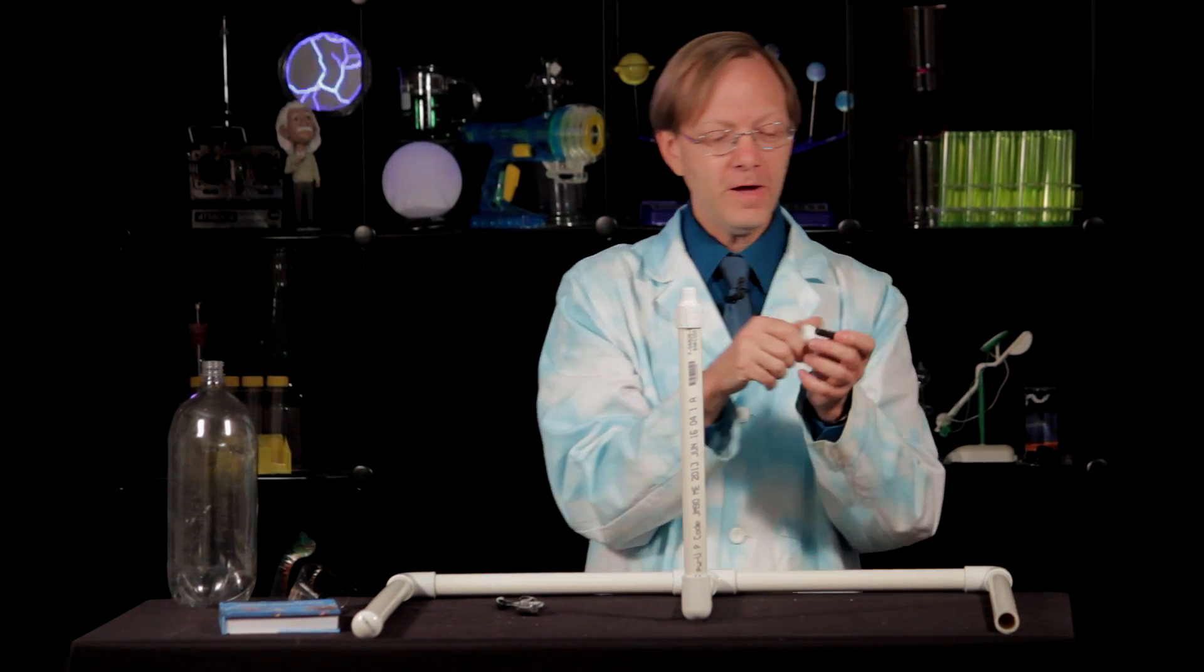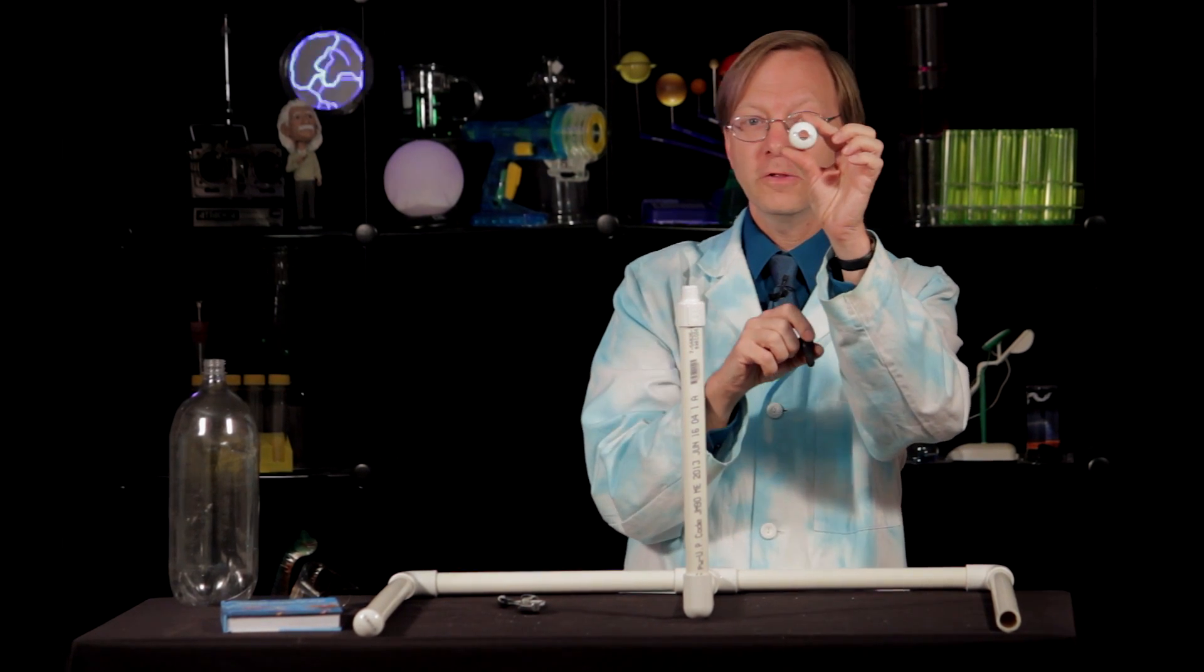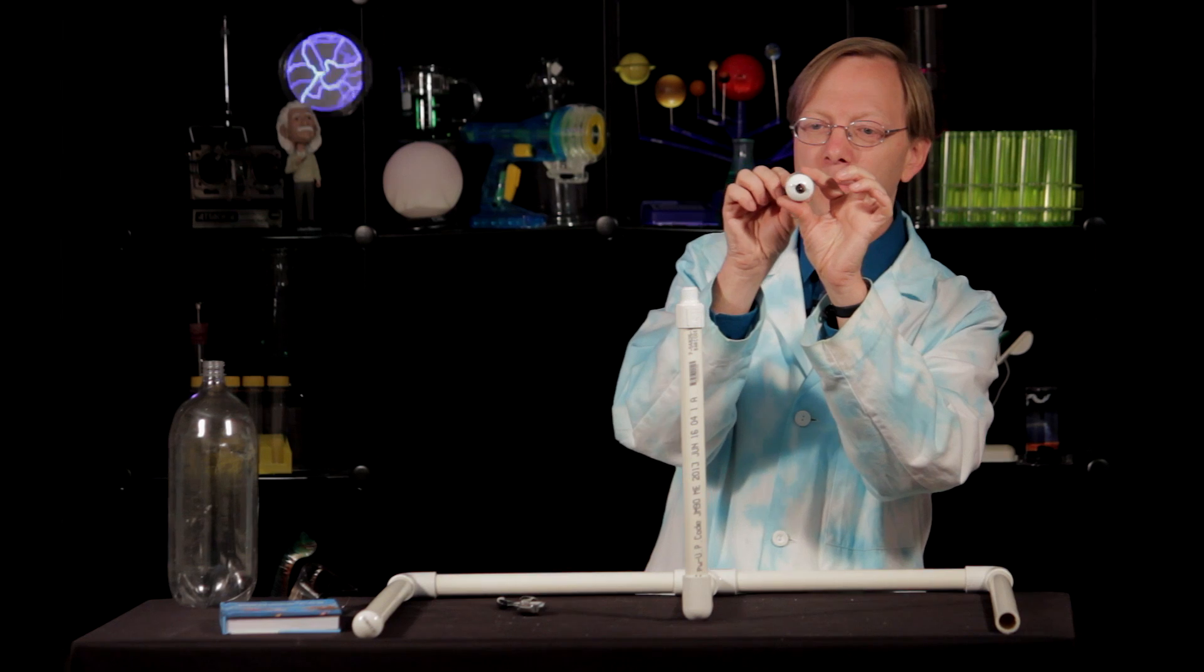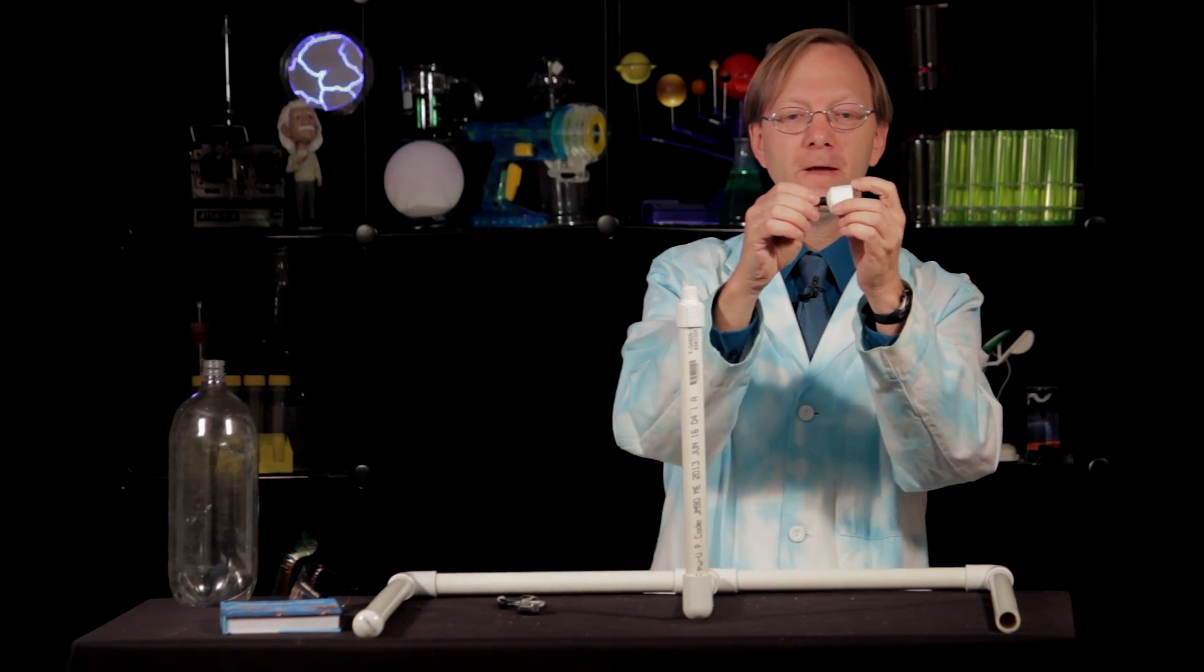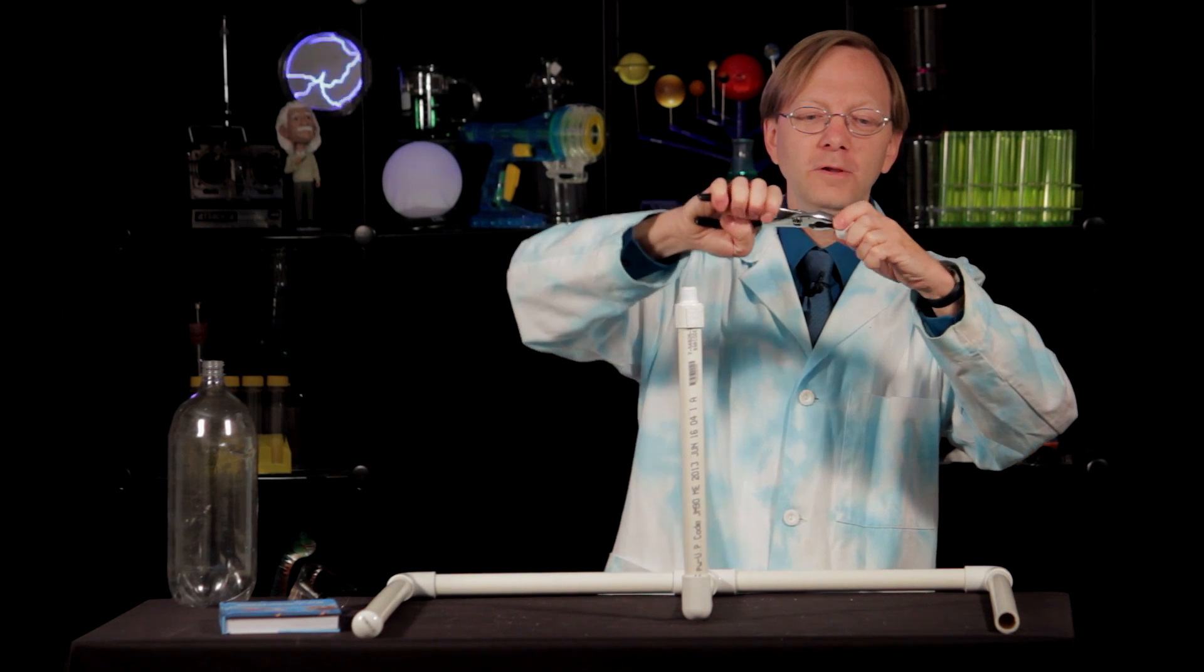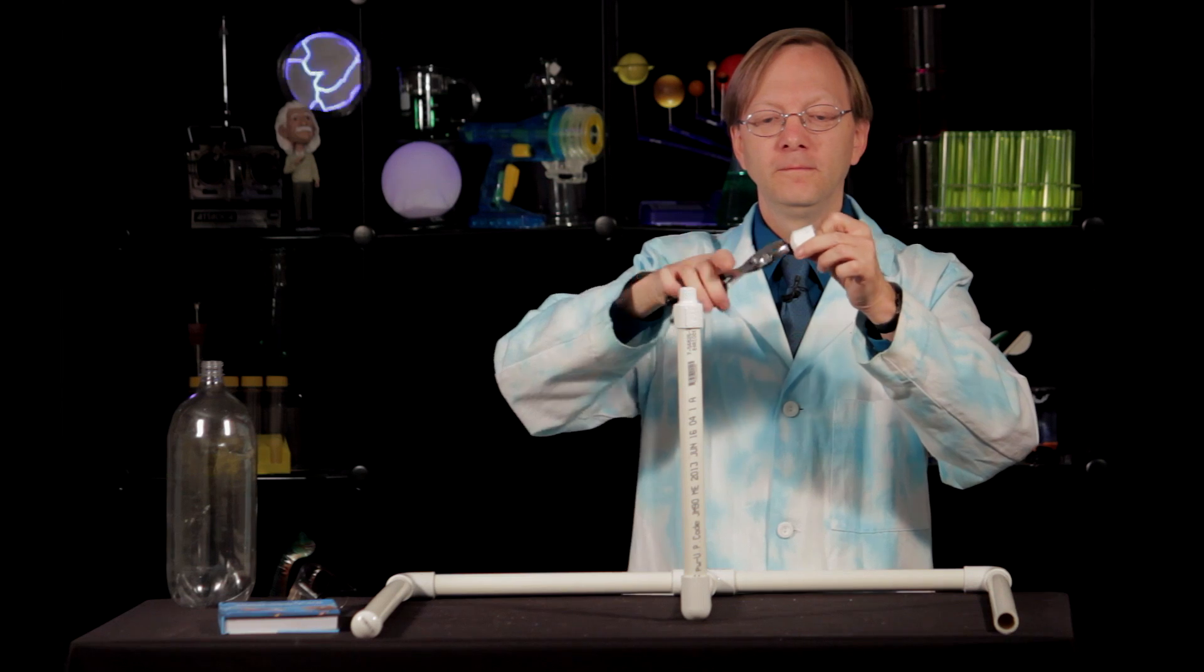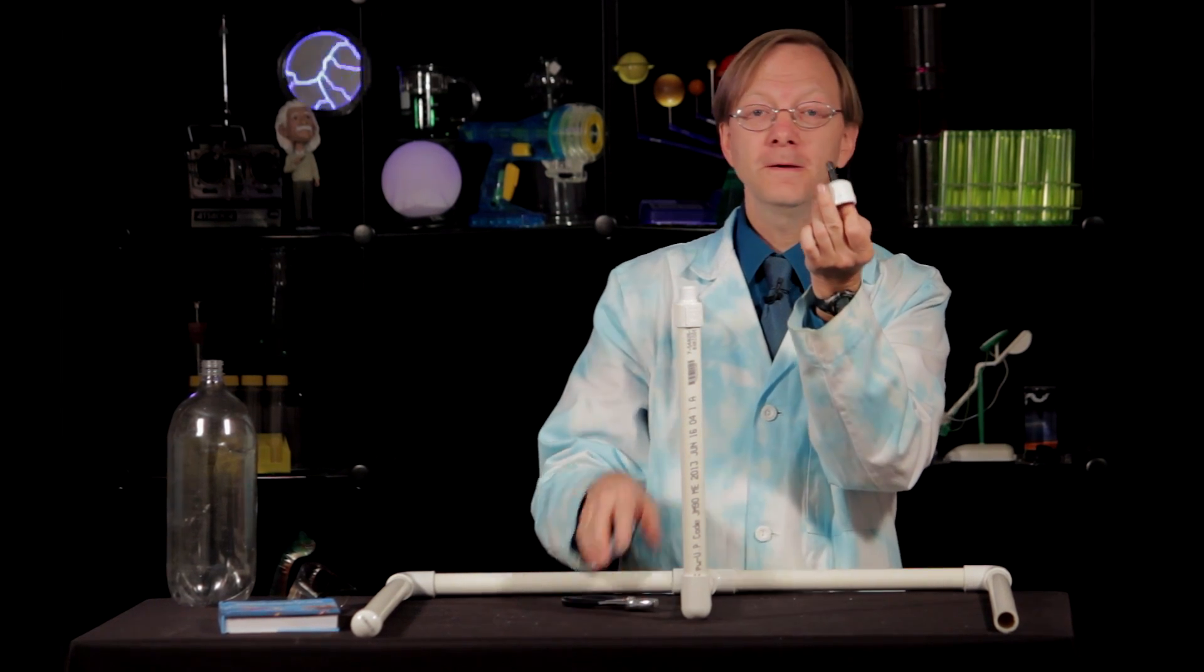Now the valve you can pick up usually at an auto supply store. Ask an adult to drill that one half-inch hole, and then pop the valve through like that, and then get a pair of pliers and pull it through so it's really secure like that. That's what it'll look like.